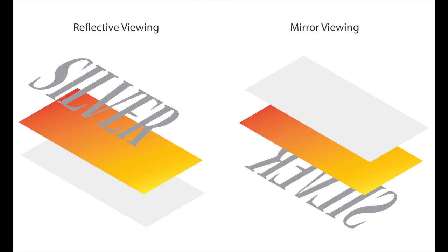Lastly, we have spot fills. Spot fill is similar to a flood fill but refers to a solid fill of one or more individual objects in an image file. An example would be using your specialty ink for text or embellishment of vector objects.